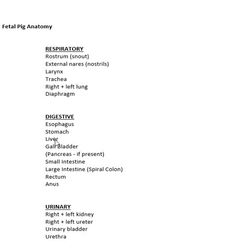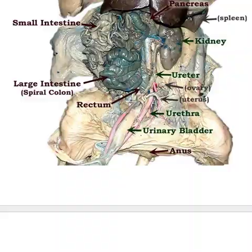So you can see the esophagus, not the stomach, the liver but not the gallbladder, and the pancreas, small intestines, and large intestine (spiral colon in a pig). The rectum is the holding chamber and the anus is the exit. Let's go ahead and look at the urinary system.